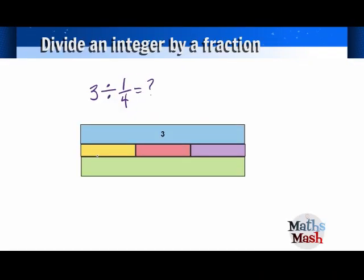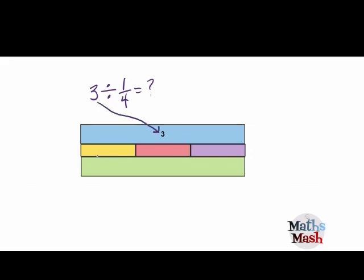Okay, so we've got 3 divided by 1 quarter, and we can see that in the top bar we've got 3, and 3 is made up of 3 ones.